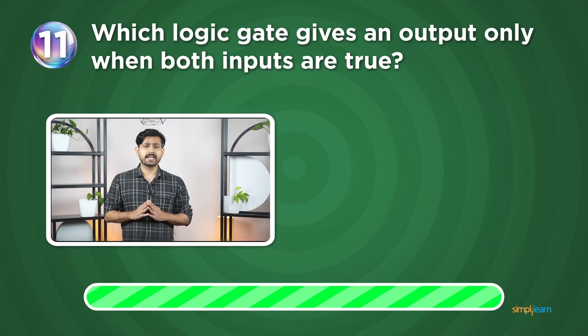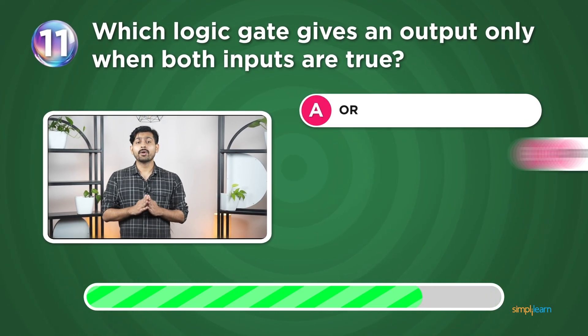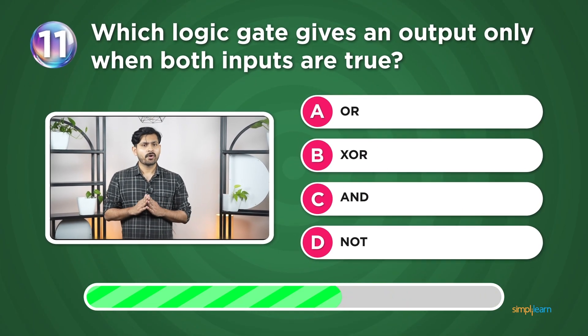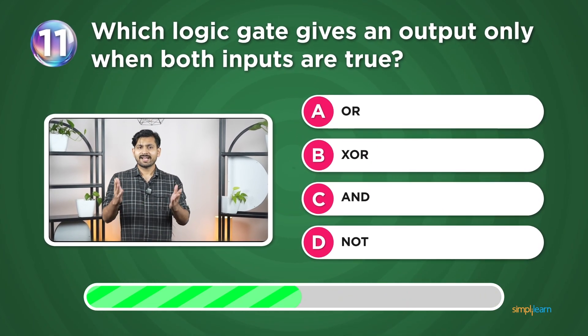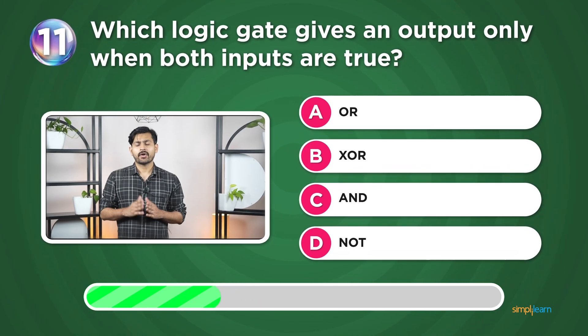Question 11: Which logic gate gives an output only when both inputs are true? OR, XOR, AND, or NOT?